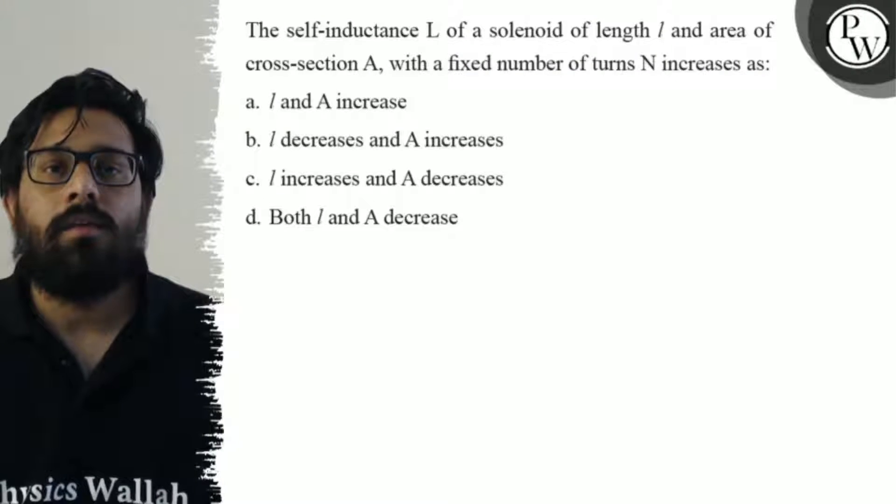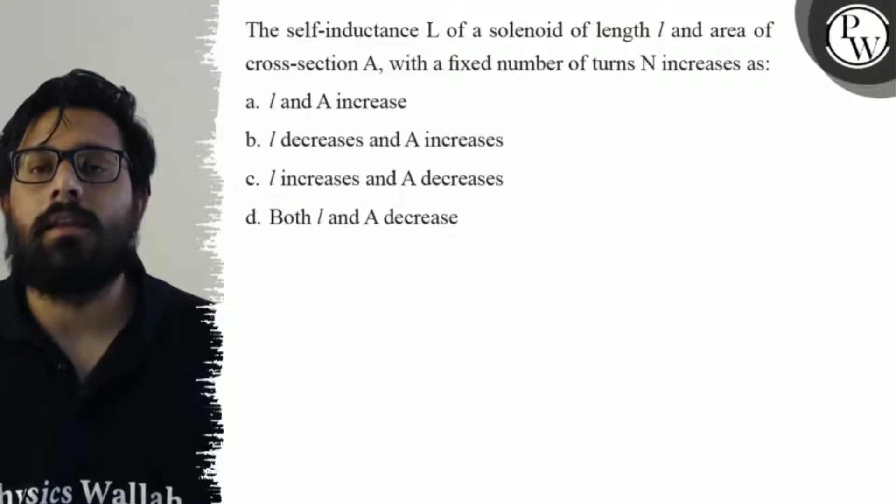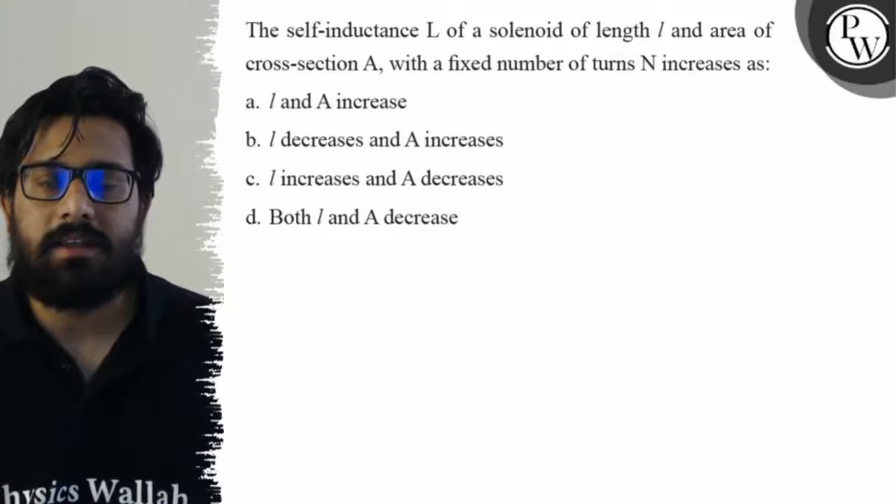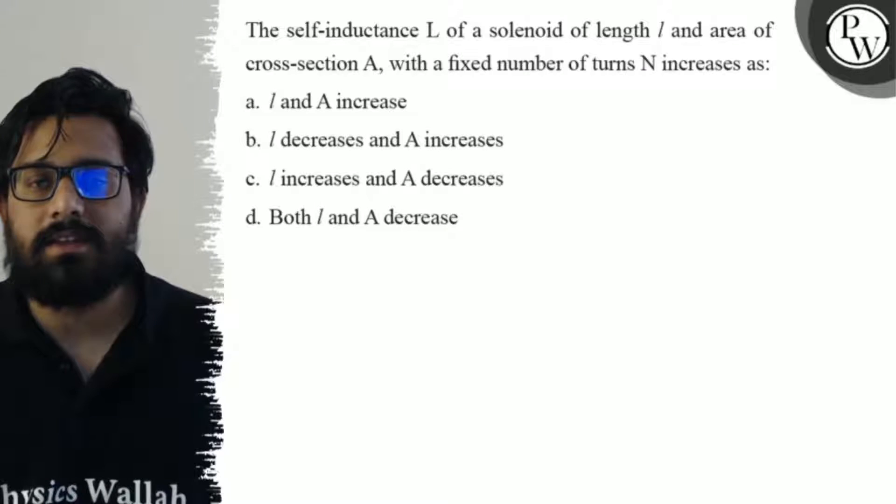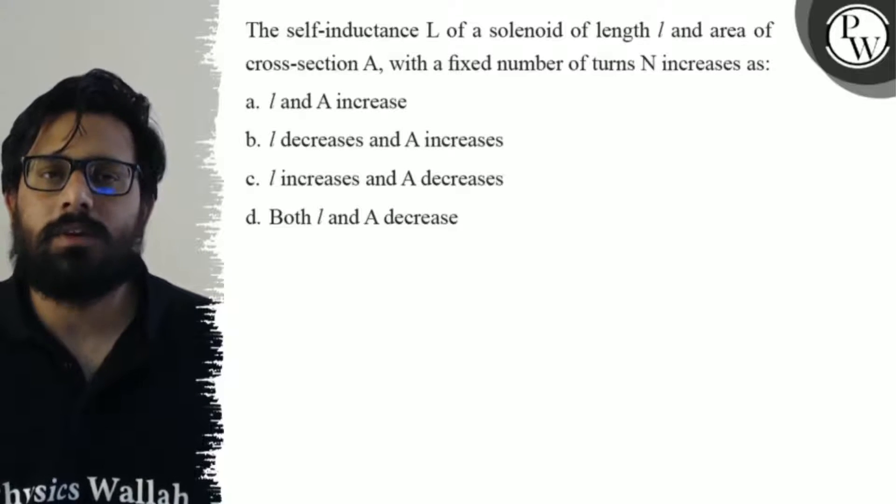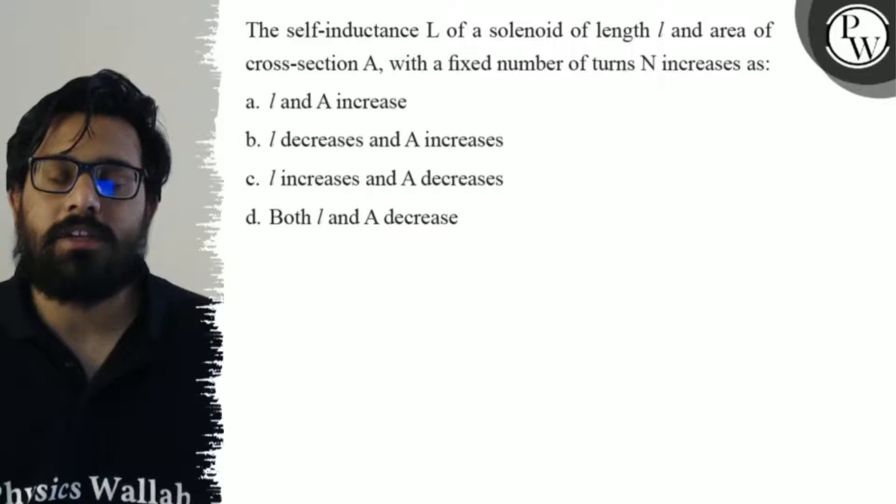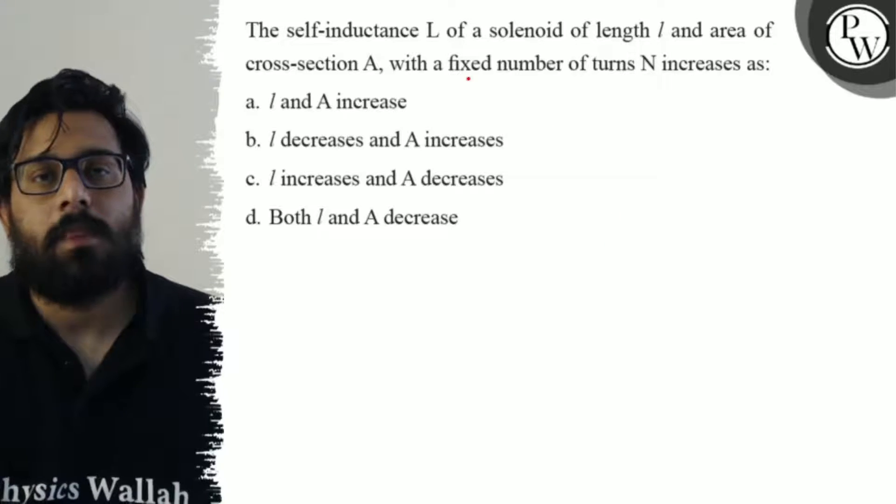Your first option says L and A increases, second option says L decreases and A increases, third option says L increases and A decreases, and your fourth option says both L and A decrease.